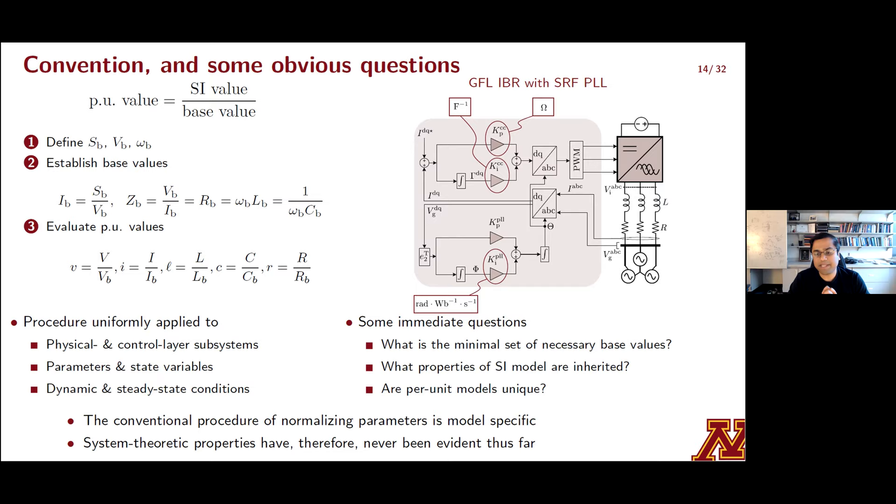So that's not the only problem with this conventional procedure. Several other questions and ambiguities come up as well. For instance, what system theoretic properties of the SI model will the per unit model acquire? Will the eigenvalues remain the same or will they be different? Are per unit models unique? On and on we can go about posing these such types of questions. And my contention is that the conventional algorithmic procedure that we all take for granted cannot answer such system theoretic questions because it is at the heart of it model specific. So as a result of this direct consequence, elementary properties of per unit models as they relate to those originating SI models have been very difficult to tease out.